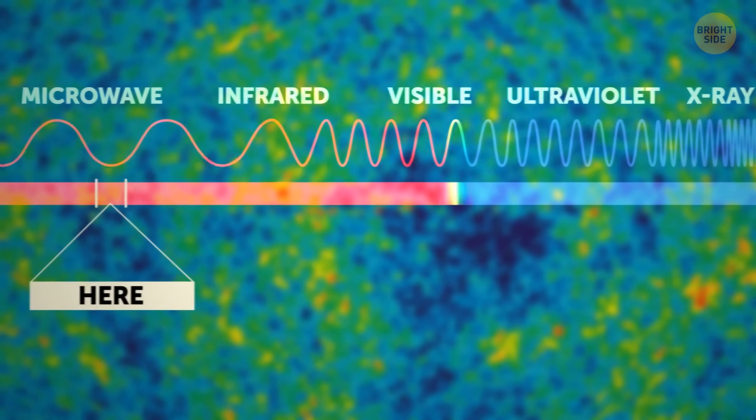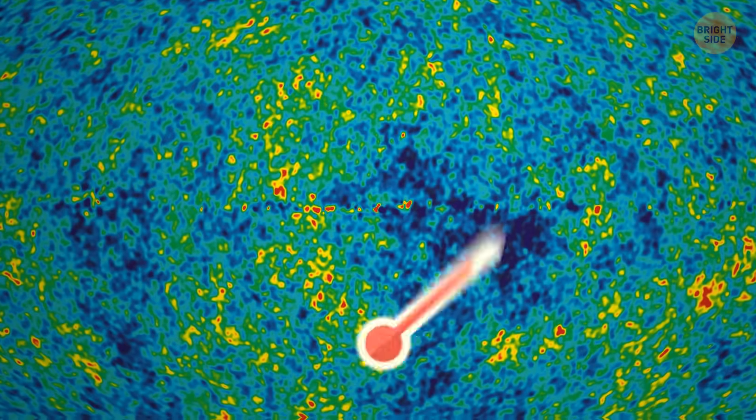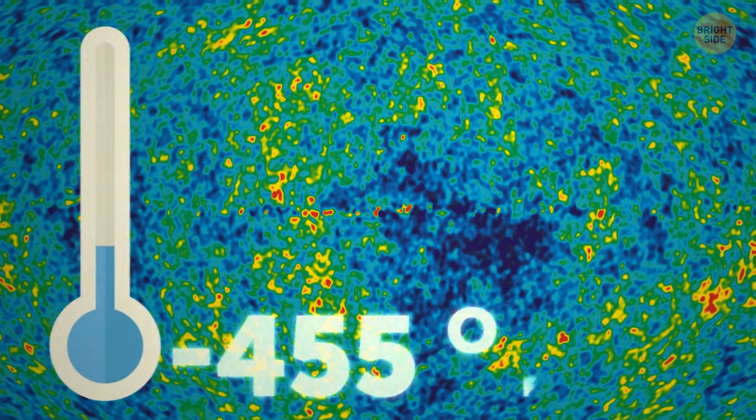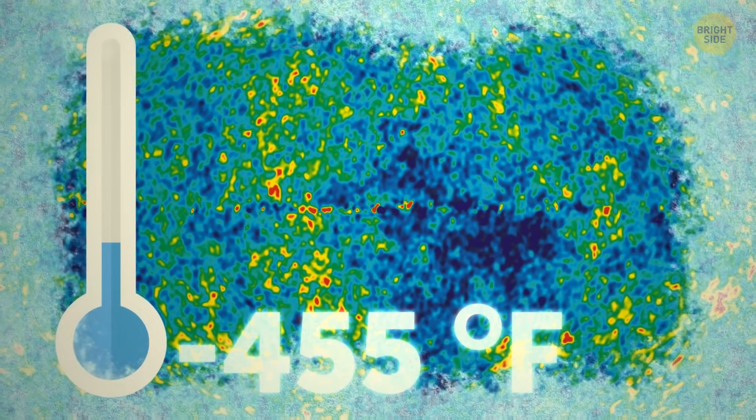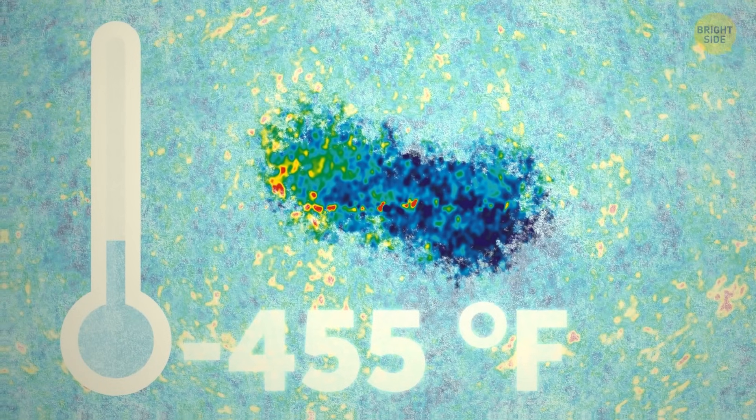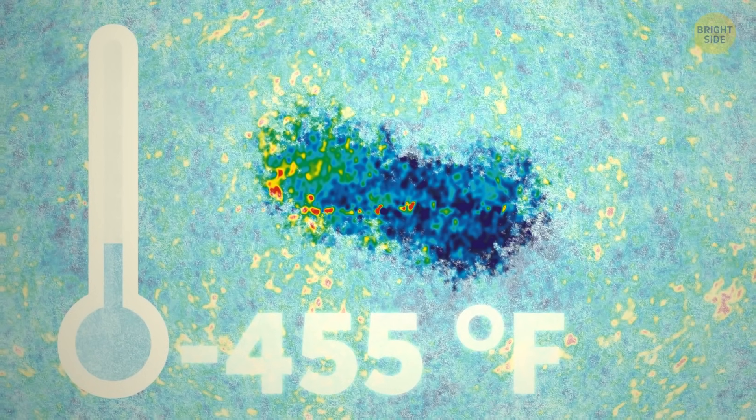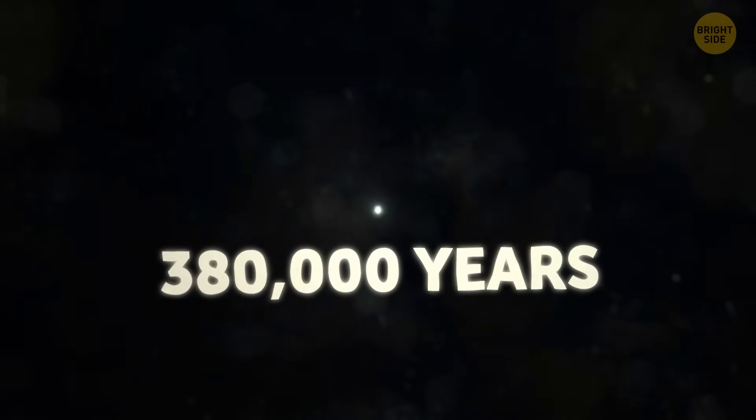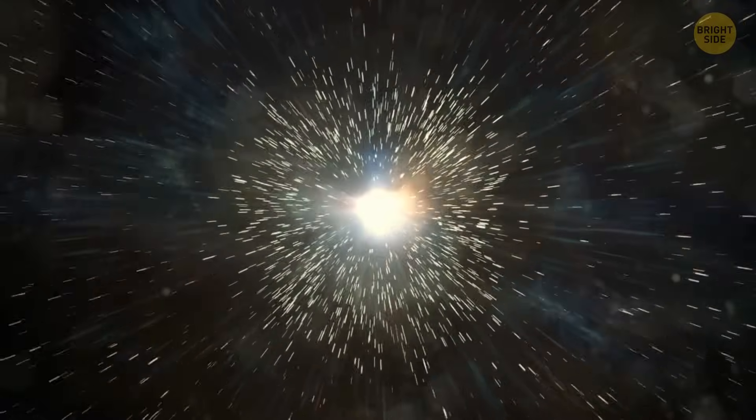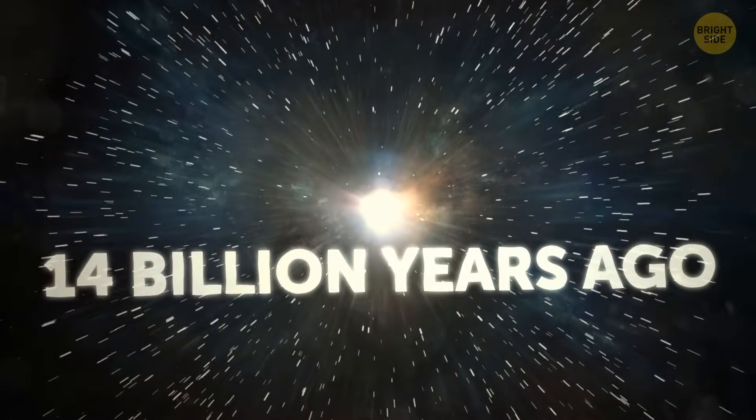The CMB is a frozen treasure, super chilly at around minus 455 degrees Fahrenheit. That's colder than any winter you've experienced. This ancient light formed about 380,000 years after the Big Bang, which happened around 14 billion years ago. So we're looking way back in time.